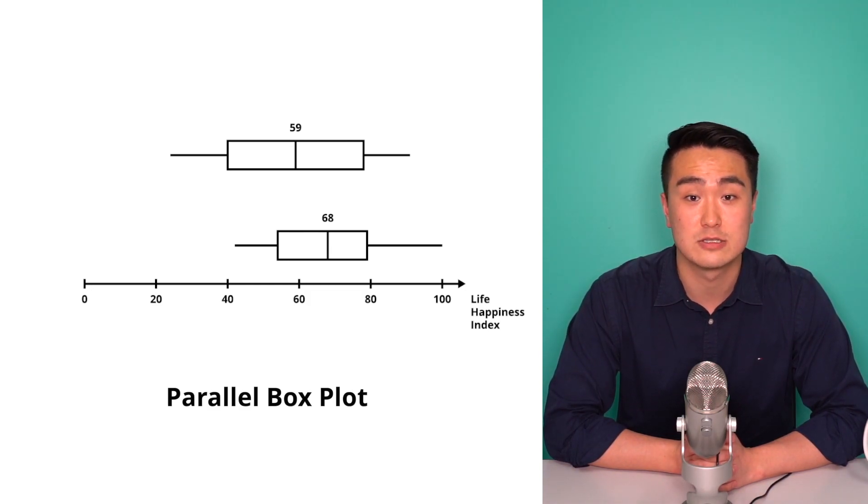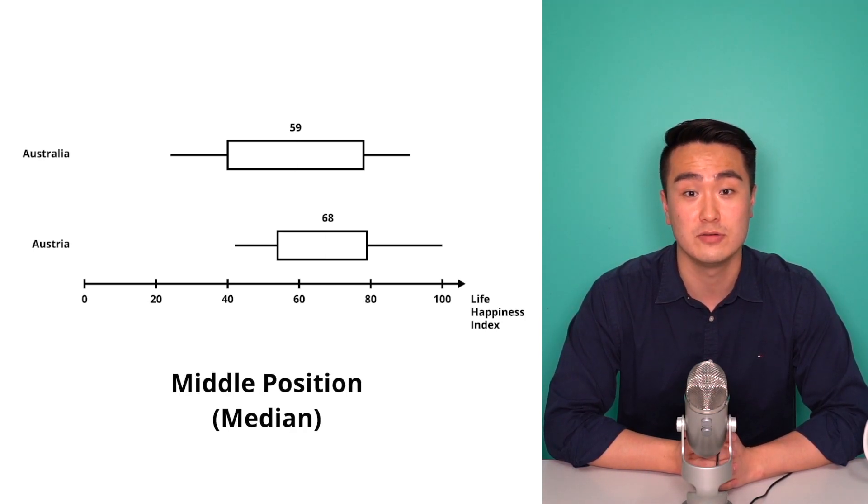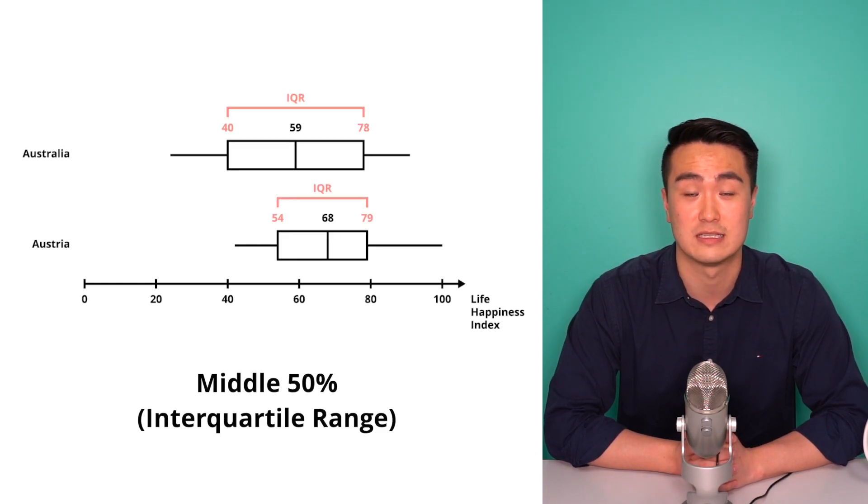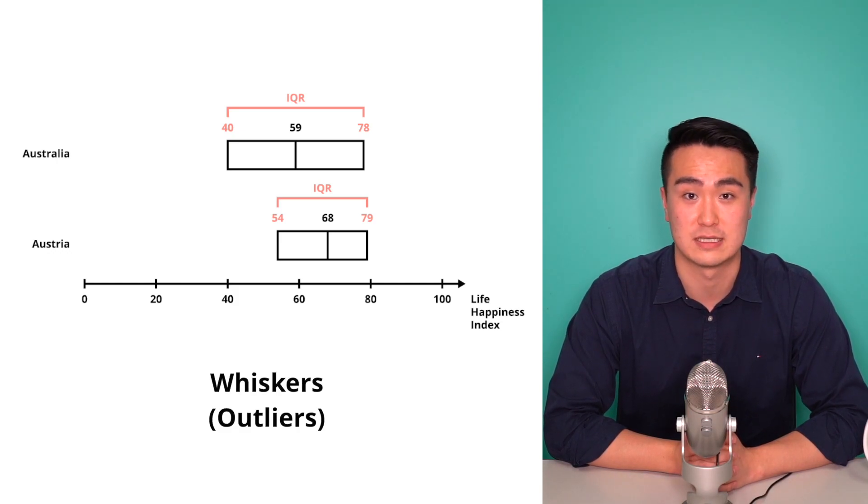For example, say we conducted two surveys of 100 people in Australia and 100 people in Austria. We can compare the results easily by plotting a parallel box plot to see how different the middle position or the median is, to see how different the middle 50% or the interquartile range is, or to see how large the outliers or the whiskers are.